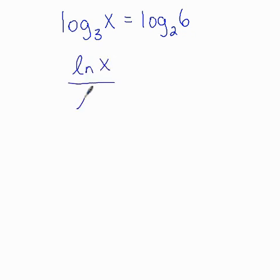So natural log of x over natural log of 3 would be on the left side, we get natural log of 6 over natural log of 2. I'm going to go ahead and multiply both sides by natural log of 3.